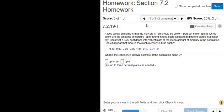A food safety guideline is that the mercury in fish should be below one part per million. Listed below are the amounts of mercury found in tuna sampled at different stores in a major city. Construct a 95 percent confidence interval estimate of the mean amount of mercury in the population. So it looks like they don't give us the population standard deviation, so we're going to use T.